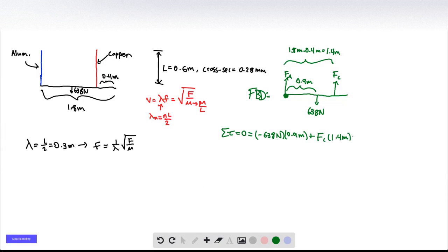And now if you plug this in and solve for Fc, you get Fc. The force of the copper wire is 410.143 newtons. And then finally, we can solve for Fa by doing a sum of forces. We know that the sum of forces is going to be equal to 0, which is Fa plus Fc minus 638 newtons. And then if you plug in what we got for Fc and do the math, what you get is Fa is 227.857 newtons.